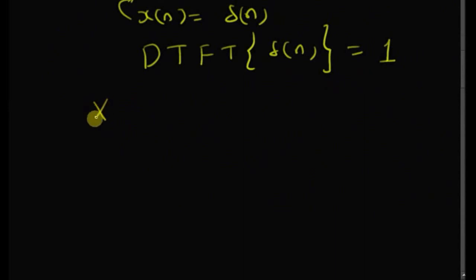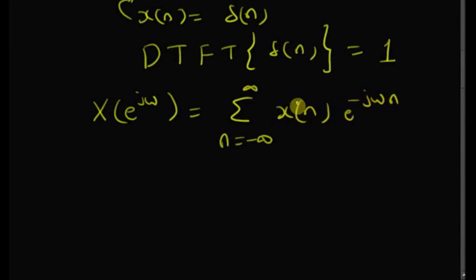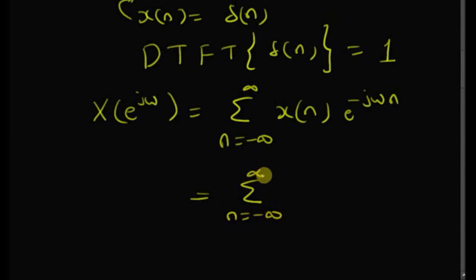By definition, X(e^jω) is equal to the sum from n = −∞ to +∞ of x(n) · e^(−jωn). Since here x(n) = δ(n), this should be equal to the summation from n = −∞ to +∞ of δ(n) · e^(−jωn).